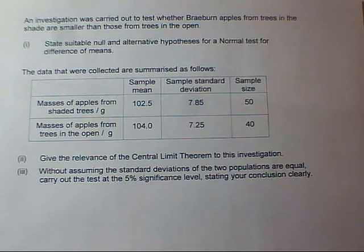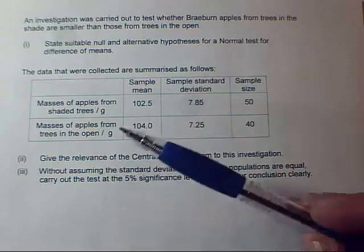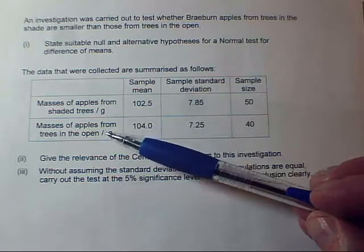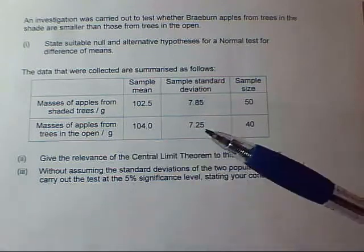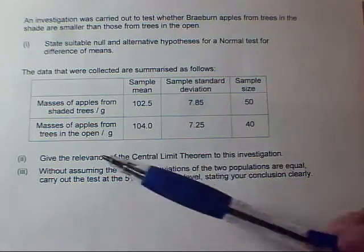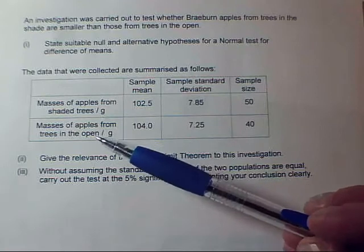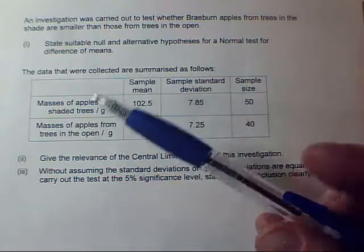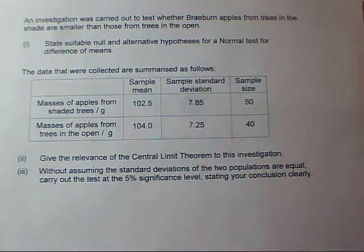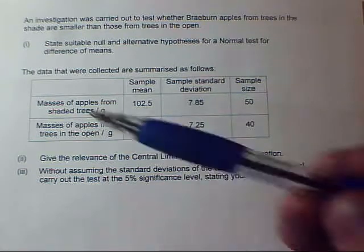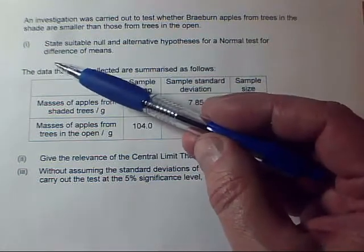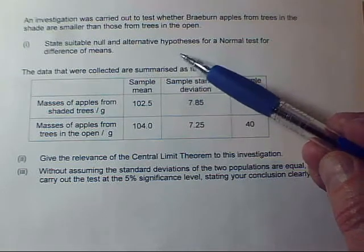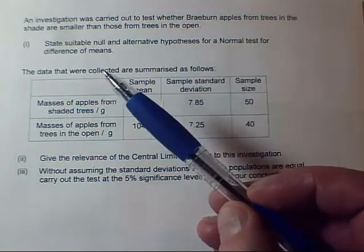We're going to do a hypothesis test about two samples of apple trees. Some are in the shade, some are in the open. We want to find out whether there's a difference in these masses. We have to read the wording of the question carefully. We're going through the normal five steps, but part one separates off one of those for us. We've got to do hypotheses — that's always step one anyway.